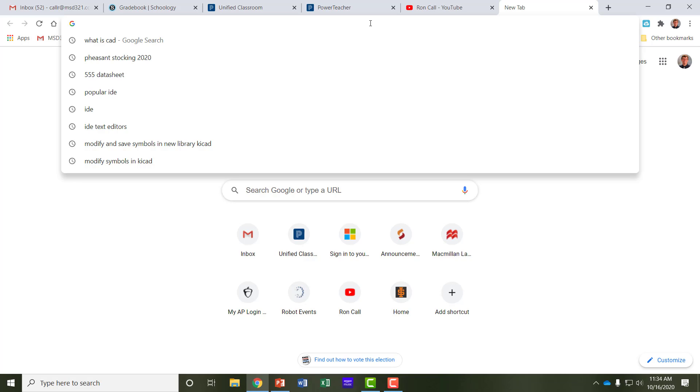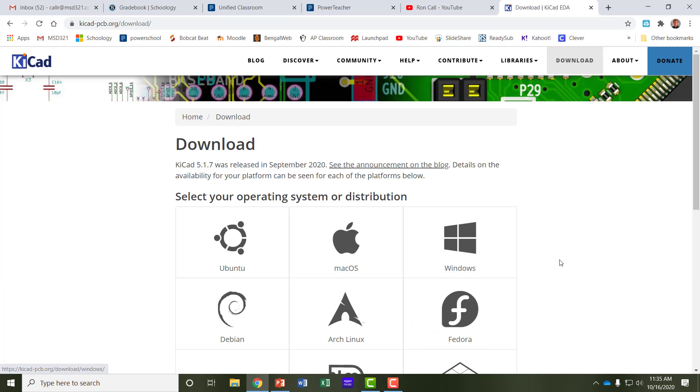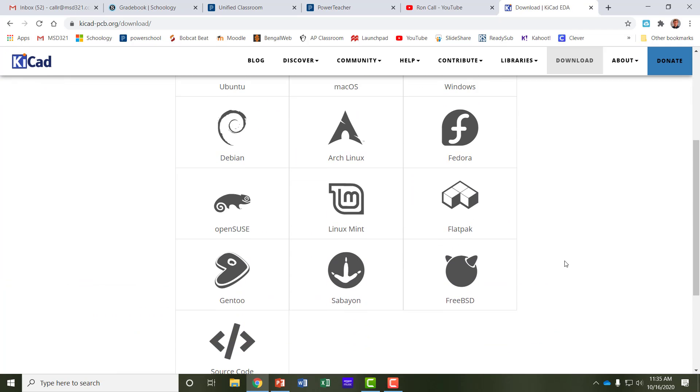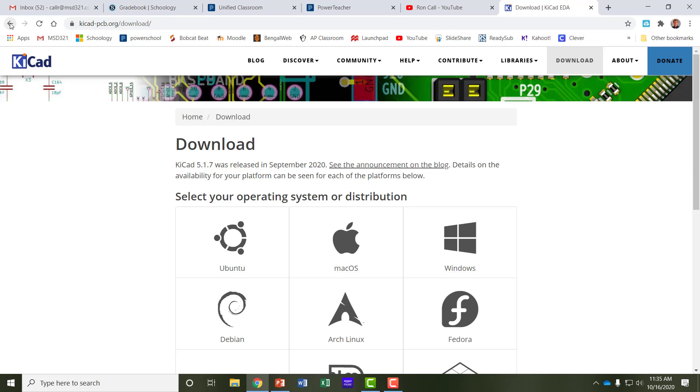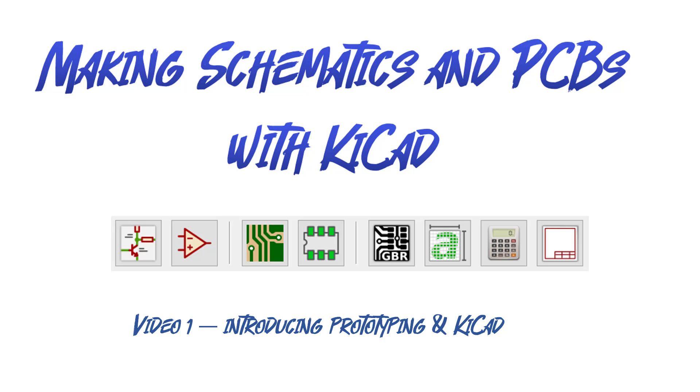So you begin by downloading KiCad. If you don't already have it downloaded and installed you can download it from this page. If you click on the download button you just select which operating system you're using. Select your download location, download that and install that. It is a fairly large program so it can take quite a bit of time to download and install. I'll end this video here and pick up with video 2 after you've installed KiCad.